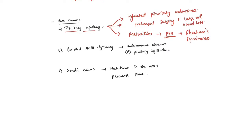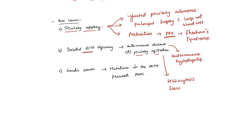Other rare causes are isolated ACTH deficiency, which is because of autoimmune disease like autoimmune hypophysitis — commonly seen in postpartum patients — and also because of pituitary infiltration secondary to various disorders like histiocytosis, sarcoidosis, tuberculosis, metastasis, and granulomatosis with polyangiitis.